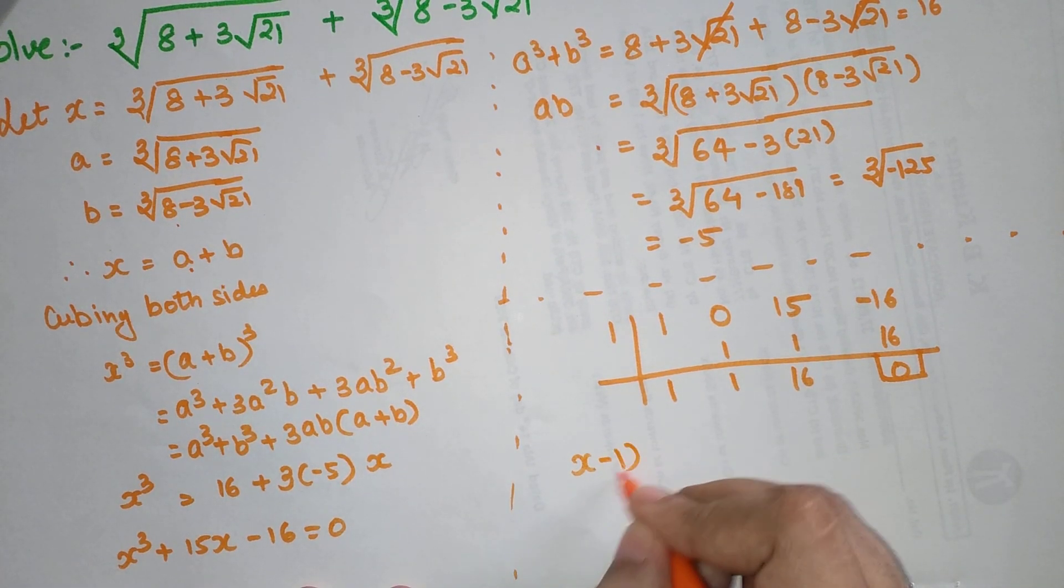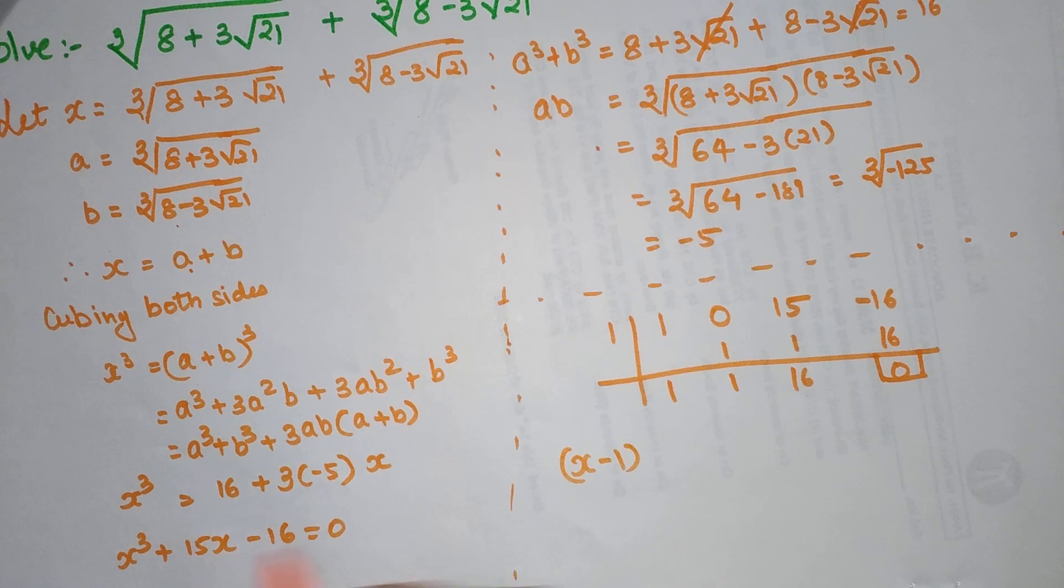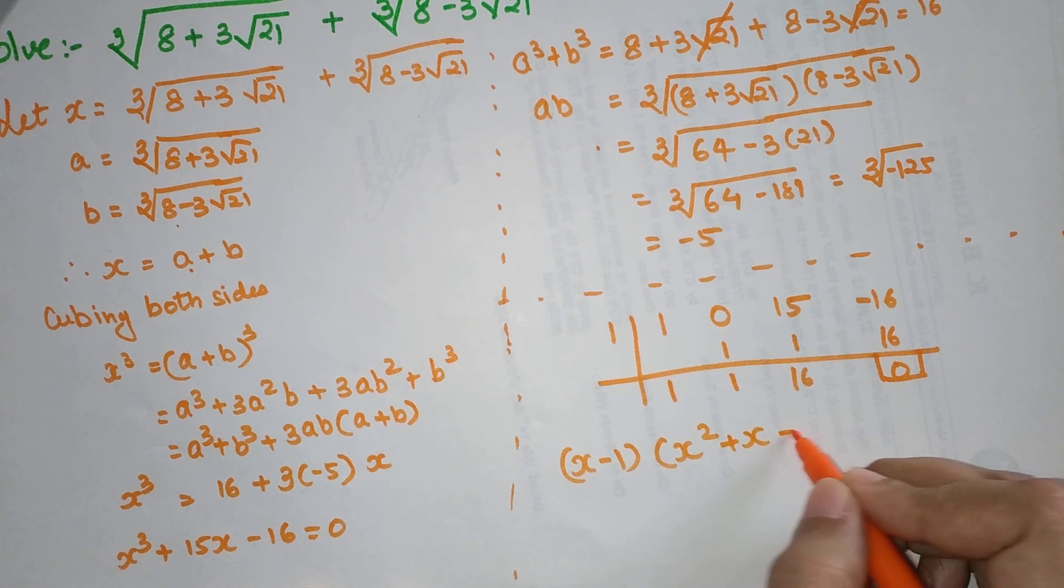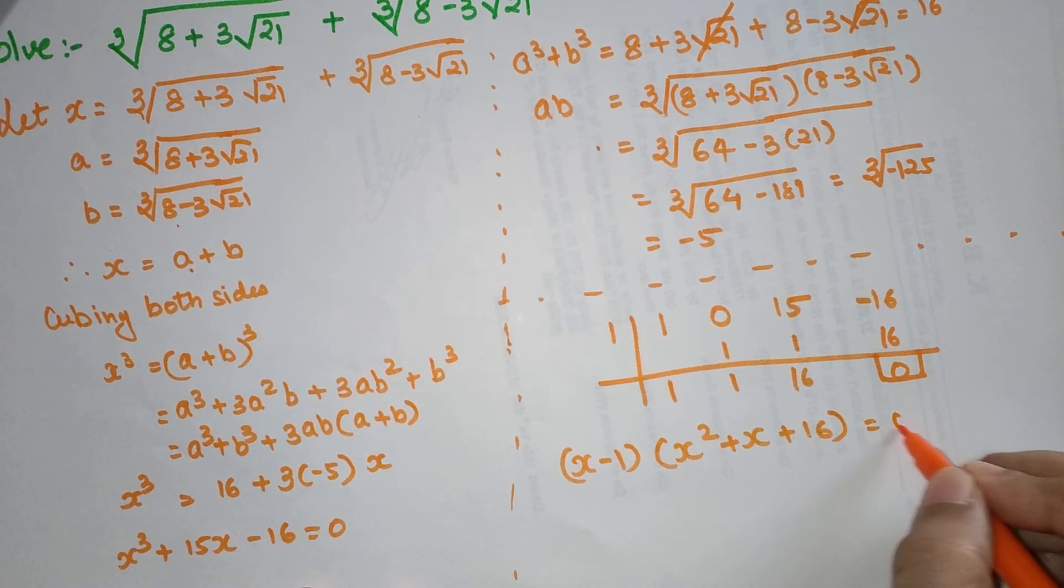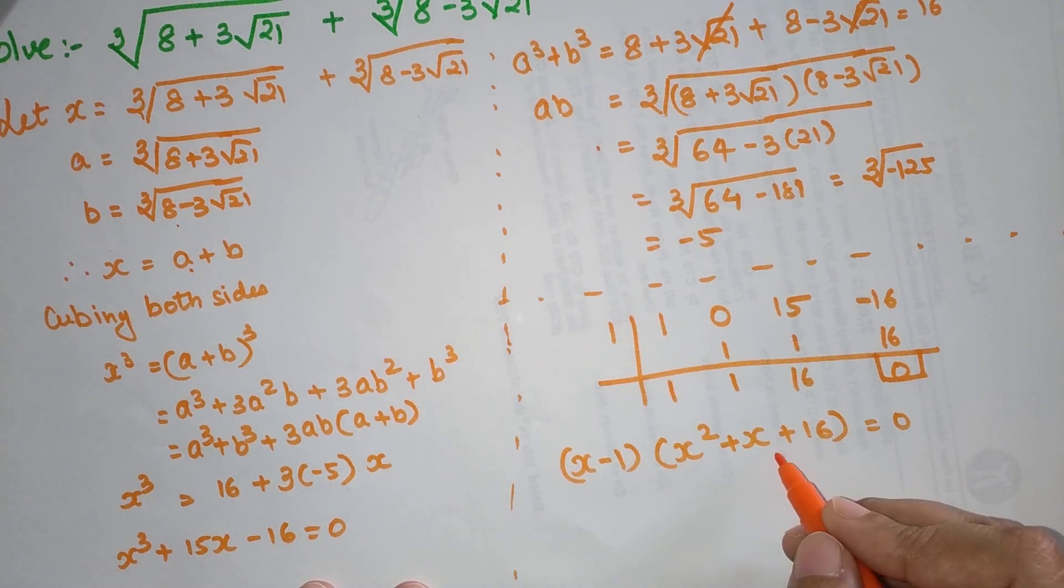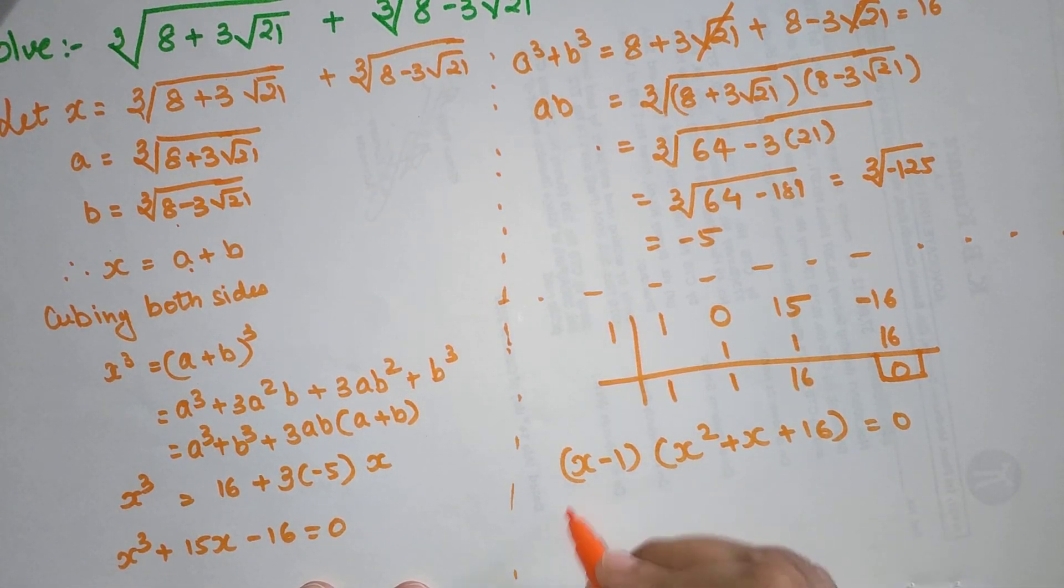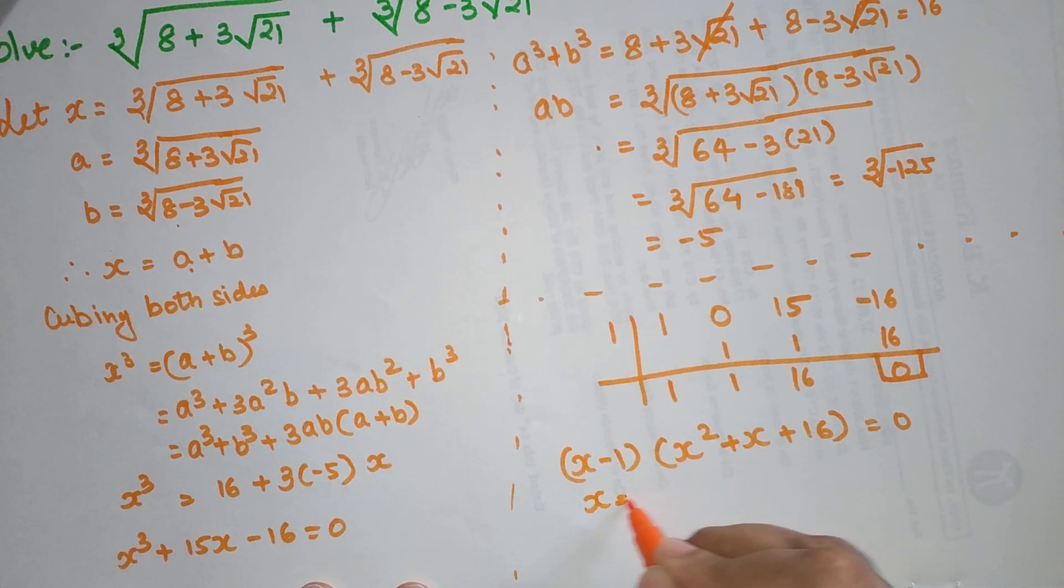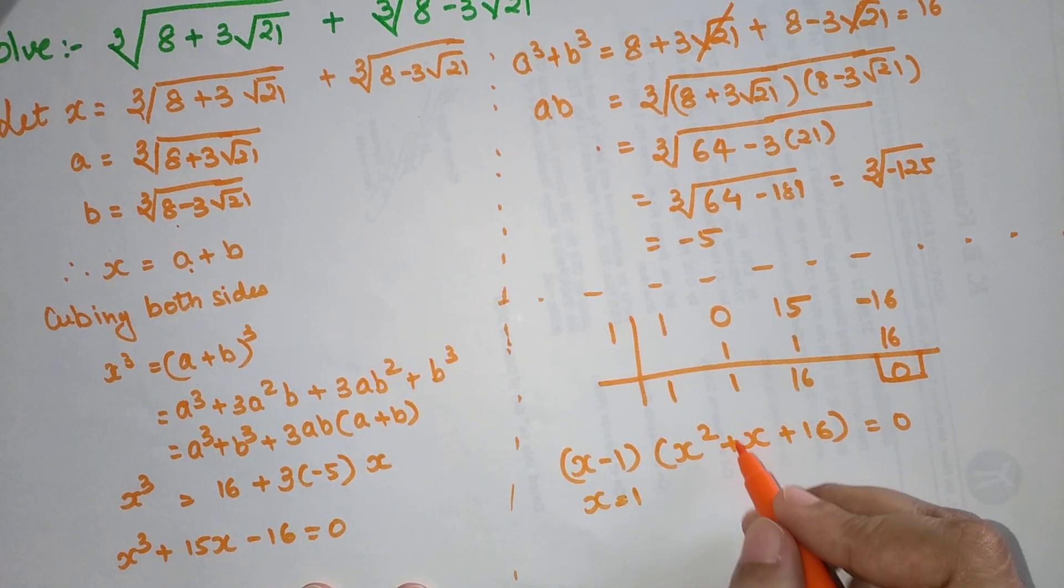Now I can say my entire cubic equation changes to x minus 1 times x squared plus x plus 16 equals 0. If you look over here, when you start solving, here I can directly say that x equals 1 is my one value.